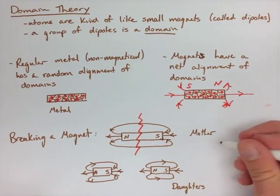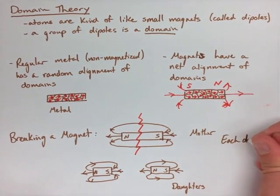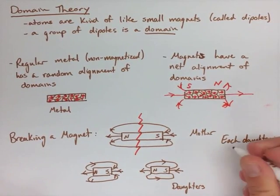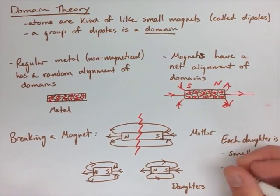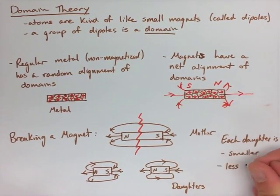Now, each of the daughter magnets are obviously smaller, and they're also less strong than the mother magnet. The mother magnet has a stronger magnetic field than each of those daughter magnets would.